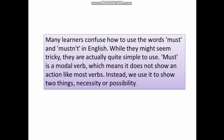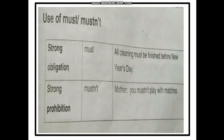For example, 'All cleaning must be finished before New Year's Day' expresses strong obligation — it must be done as a duty, and everyone is expected to do it. Mustn't, on the other hand, expresses strong prohibition — something that is not allowed by the rules of that particular society. For example, 'Mother says you mustn't play with matches.'